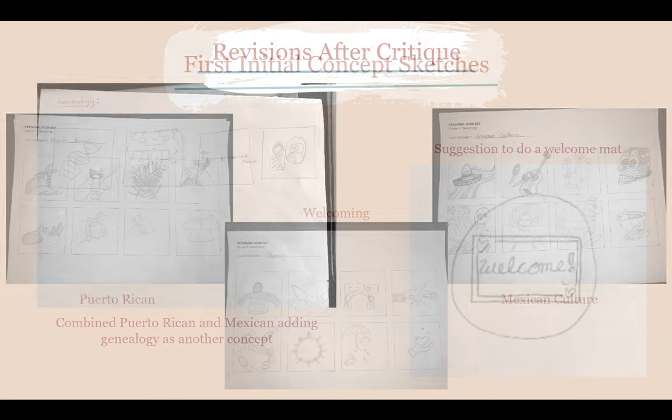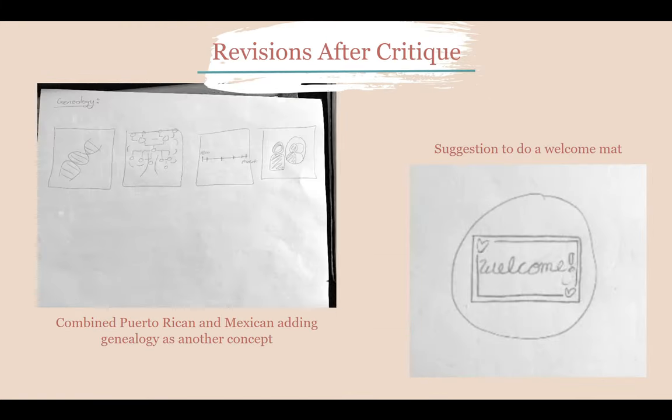We had a critique where my peers suggested that I combine Puerto Rican and Mexican culture, which made room for genealogy to be added as another concept. They also suggested creating a welcome mat for my welcoming icon instead of any of my other icons. They also suggested not to add too much detail to my final icons.